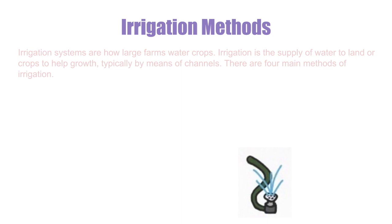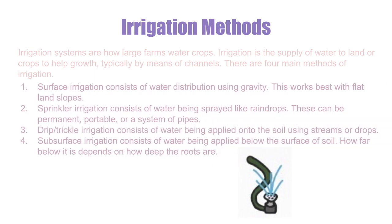Plants also require water, and irrigation systems are how large farms water crops. Irrigation is the supply of water to land or crops to help growth, typically by means of channels. There are four main methods of irrigation: surface irrigation, where water is distributed using gravity and works best with flat land slopes; sprinkler irrigation, where water is sprayed like raindrops and can be permanent, portable, or a system of pipes; drip or trickle irrigation, where water is applied onto the soil using streams or drops; and subsurface irrigation, where water is applied below the surface to the soil, with depth depending on how deep the roots are.